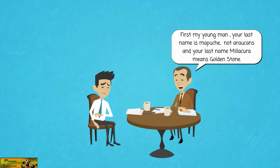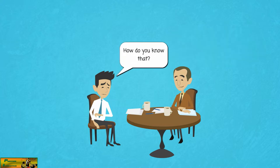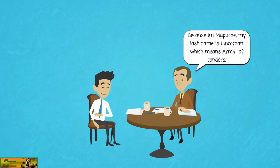First, my young man, your last name is Mapuche, not Araucano. And your last name Milicura means gold and stone. How do you know that? Because I'm Mapuche. My last name is Lincoman, which means army of condors.